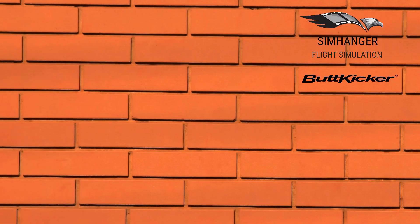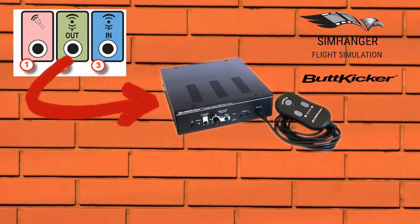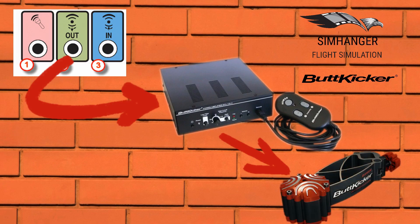So what does the ButtKicker do and how does it work? Essentially, it takes the analog sound signal from your computer and feeds that through to an amplifier. From the amplifier, the information is then fed through to a transducer. A transducer is very much like a subwoofer — in a subwoofer, the vibration makes the speakers move. In the case of the ButtKicker, a weight is moved and that generates a vibration that's in sync with the sound coming from the computer.